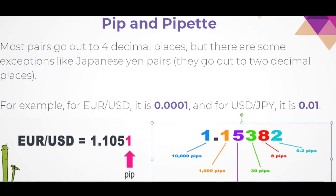So, every correct PIP we make using the standard lot, we make $10. And if we make a wrong prediction, every PIP will cost us $10.